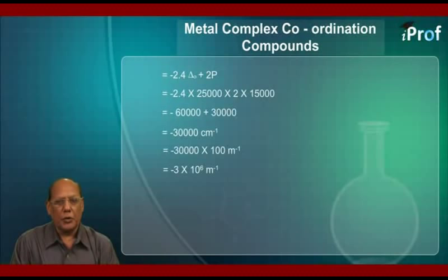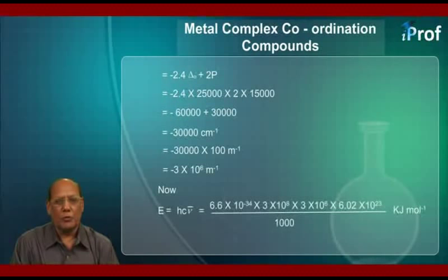It can be converted into kJ per mole as shown here. Since E equals hc times ν̄, substituting the values: 6.6 × 10⁻³⁴ × 3 × 10⁸ × 3 × 10⁶ × 6.02 × 10²³.